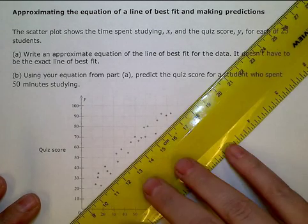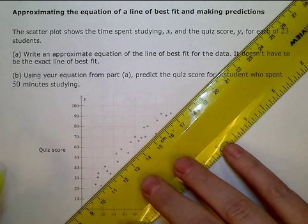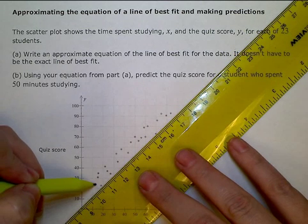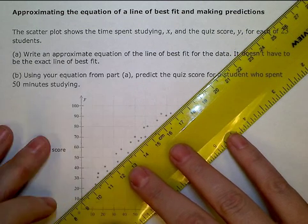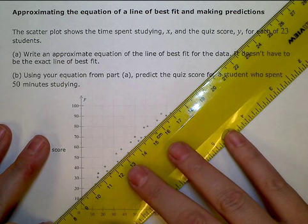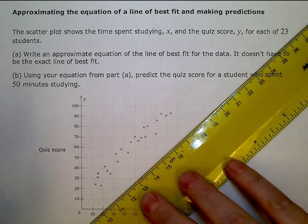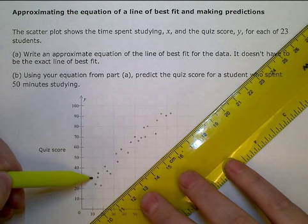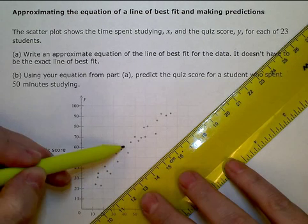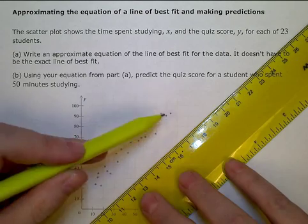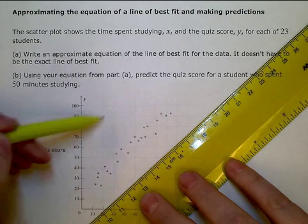I'm going to just use a straight edge and draw in a line here that I think is a pretty good line of best fit. If you can manage it, it will help out a lot if we can somehow go through two grid intersections on our coordinate plane here.